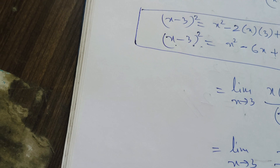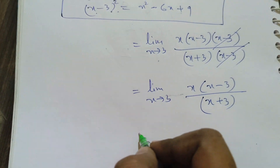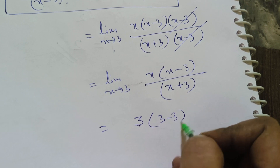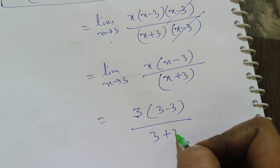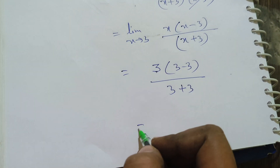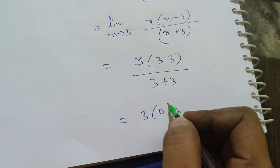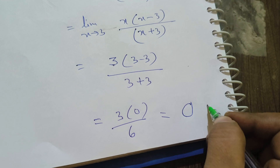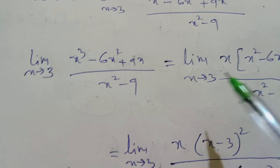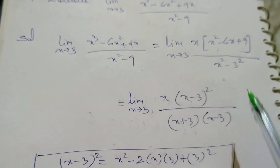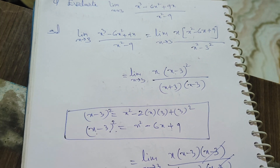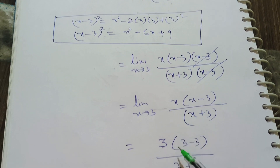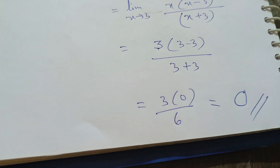Now we substitute x = 3: this becomes 3·(3-3) / (3+3) = 3·0 / 6 = 0. So even after simplification, the limit evaluates to 0.